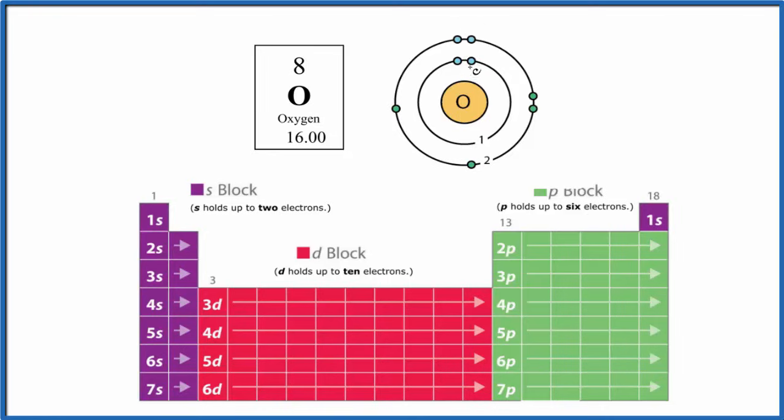But remember, we used 2 here, and we only have 8 total. So we can only put 6 in that second energy level. So we put them 2, 4, 5, 6. 6 electrons in the second energy level.